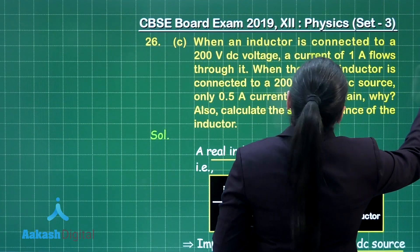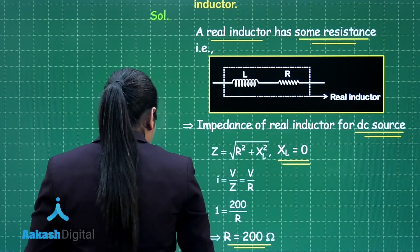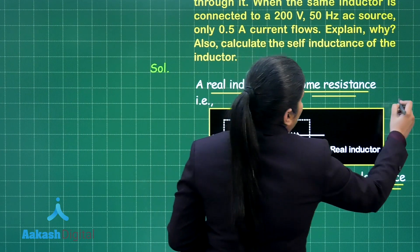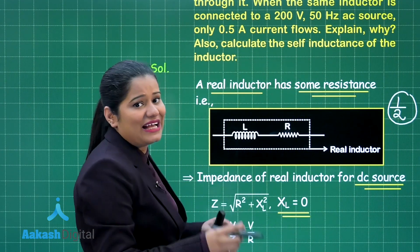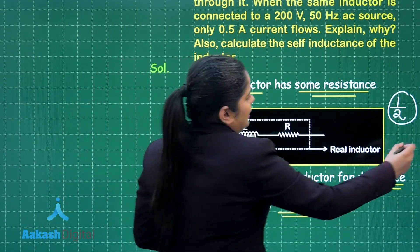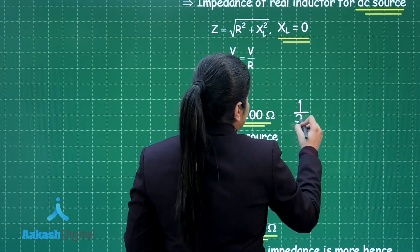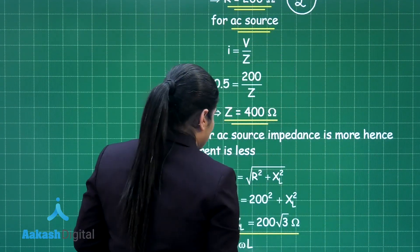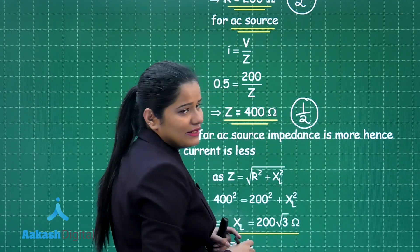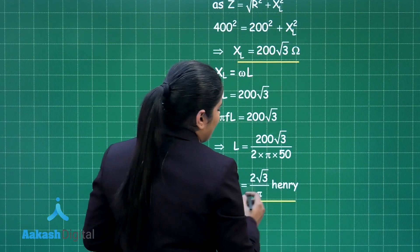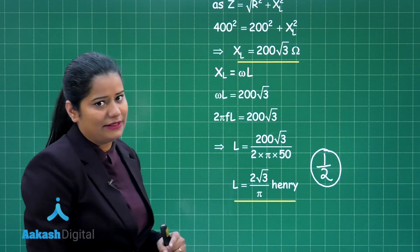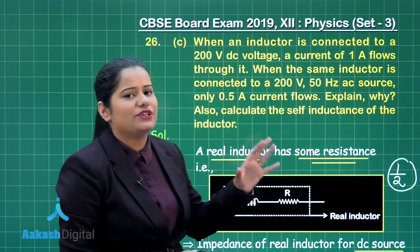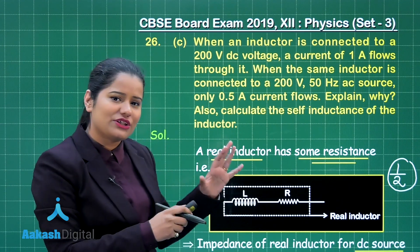This part of the question was for 2 marks. You get half a mark for writing the reason that a real inductor has some resistance, causing less current when connected to AC. You get half a mark for calculating the resistance from the DC case, half a mark for calculating the impedance in the AC case, and the final half mark for calculating the inductance. This gives you 2 marks for Part C and 5 out of 5 for this choice of question 26.